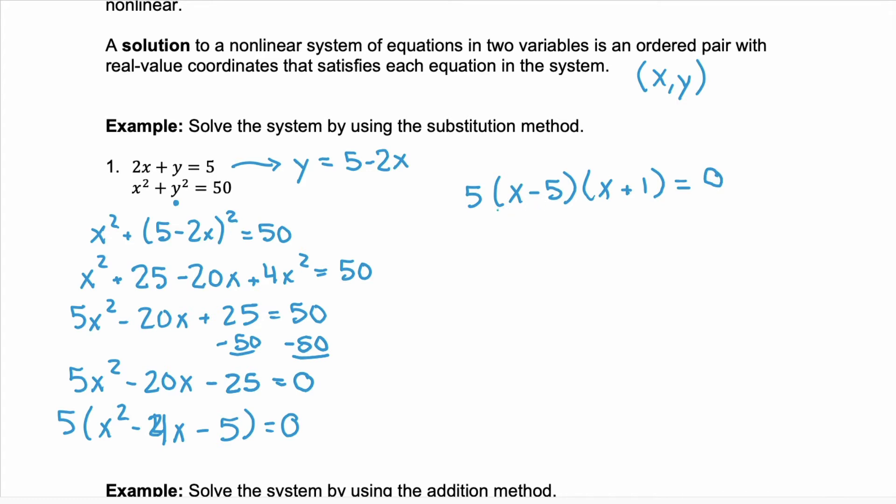Now you apply that zero product property. You have 5 equals 0. That is not a true statement, so we toss it out. We have x minus 5 equals 0 or x equals 5, and x plus 1 equals 0 or x equals negative 1.